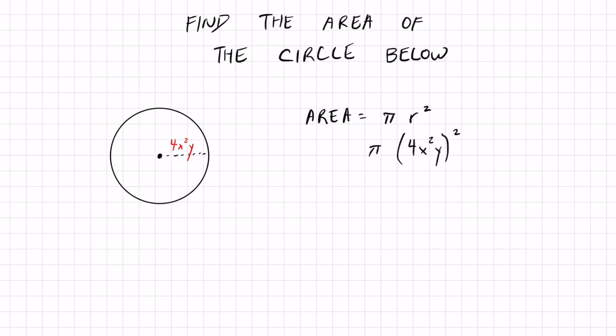And then similar to the other problems, you got an exponent on the outside. You're going to multiply that to each exponent in the inside. And if you don't want to rewrite it and you can start doing it in your head like this. 4 squared x4 y squared. Then do so so you can go through this faster.